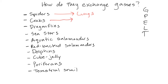What do crabs have? Gills. But then how do they go up on land and breathe? Their gills are internalized, but they still have to have water in them. So if a crab is left out of the water too long, it'll dry up and die — it has to go back to wet its gills.